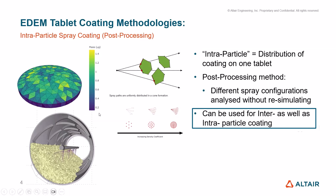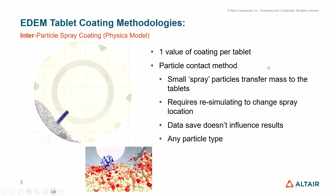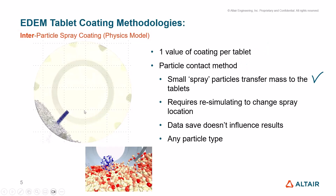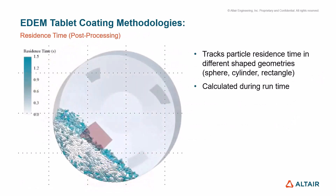There are other types of coating methodologies in EDEM. There's a spray coating method which is an inter-particle spray coating method — this gives you one value per tablet. It's a contact model, which means the simulation has to be rerun if you change the spray location. The small spray particle transfer masks the tablets, but the data save doesn't influence results and it can be used for any particle type. We also have the residence time method, which strictly speaking isn't a tablet coating methodology.